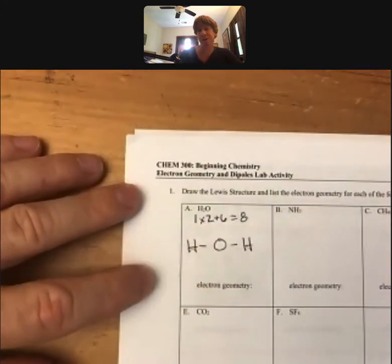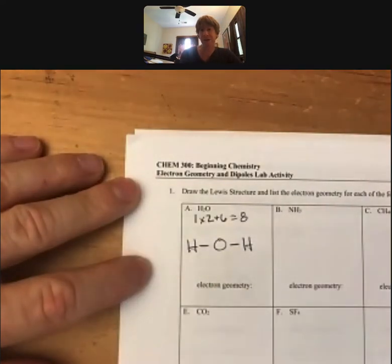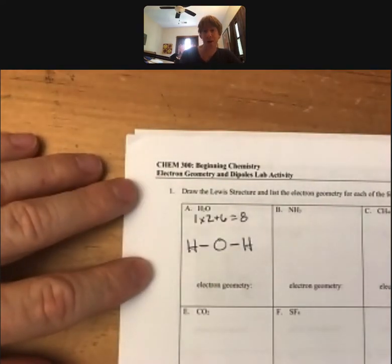We'll connect the hydrogens using single bonds. Remember each dash is a single bond and each dash is two electrons, so I have four electrons.